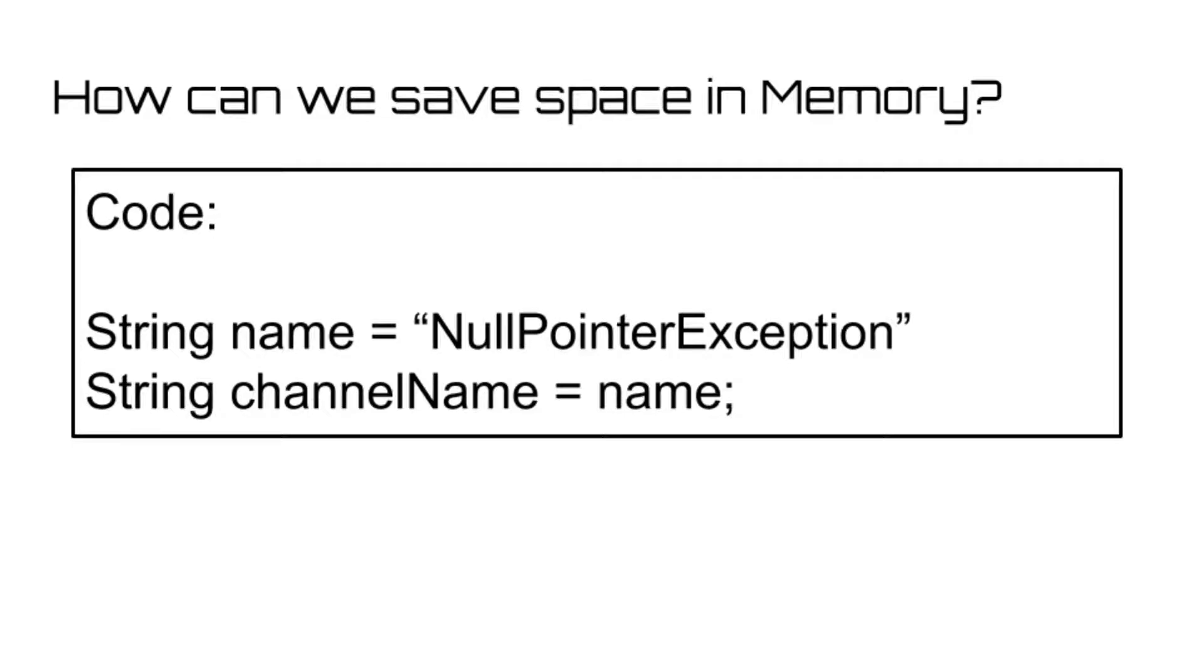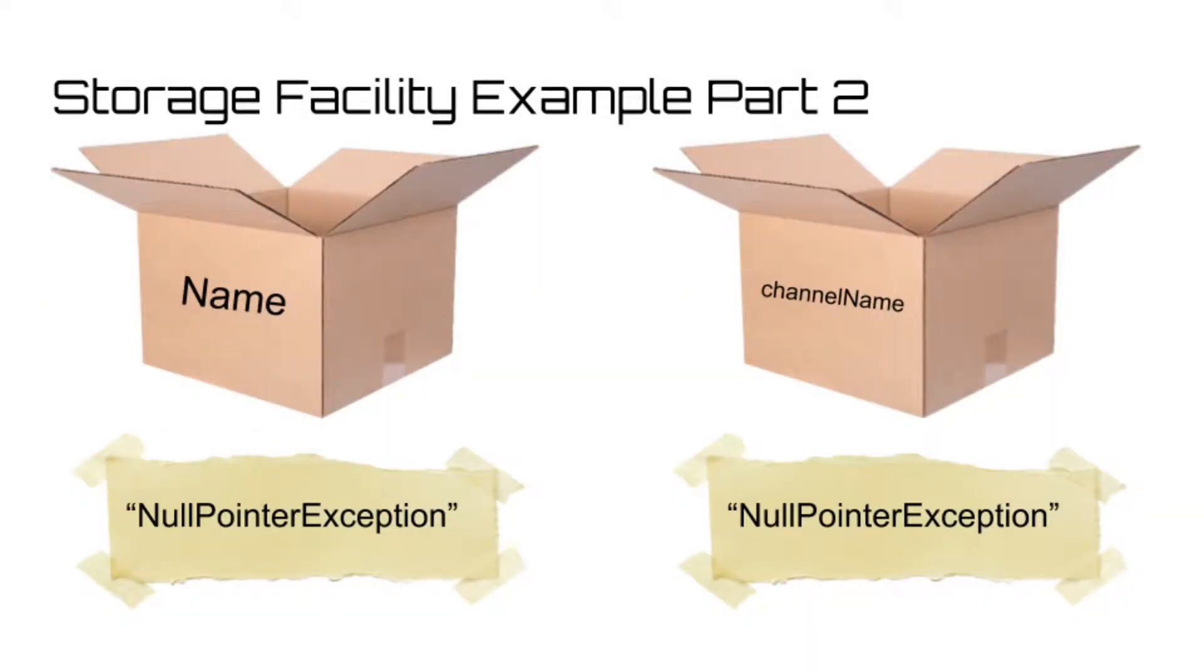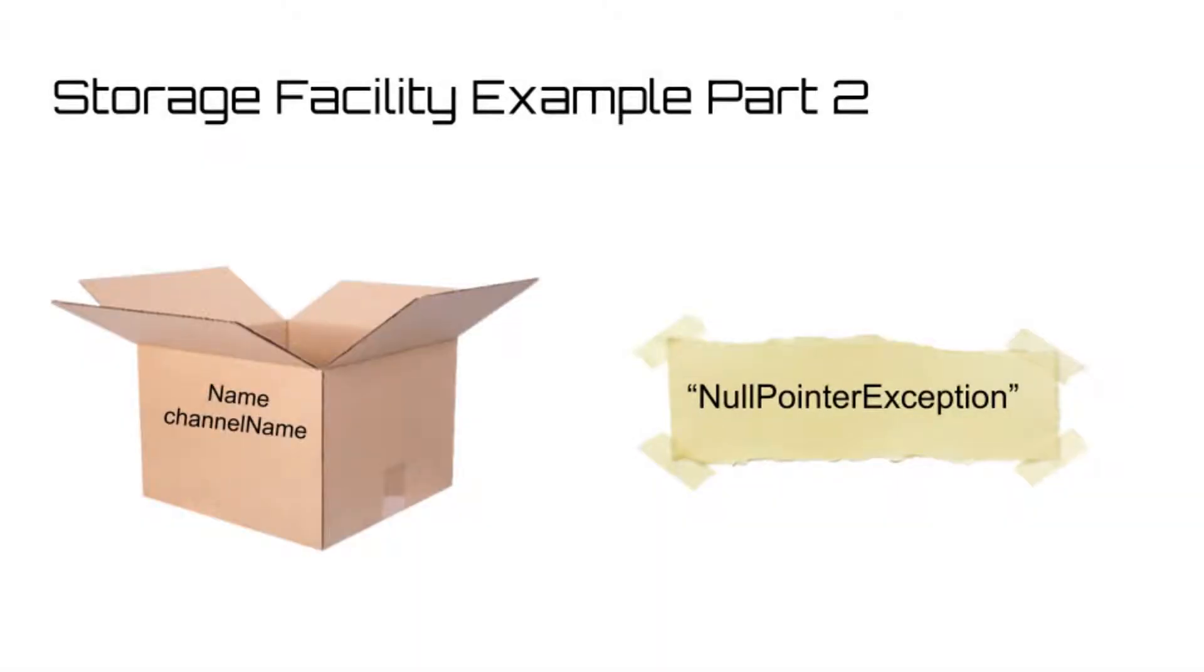We usually do this to save space in memory and to simplify code. This doesn't create a space in memory for this new variable, it simply points to the same location of memory that we have already created for the name variable. Going back to our storage facility example, this would be as if instead of creating a whole new box labeled channel name, we instead simply added another label below the name label entitled channel name. Now we have two variables, but they both point towards the same contents, that being the string null pointer exception.